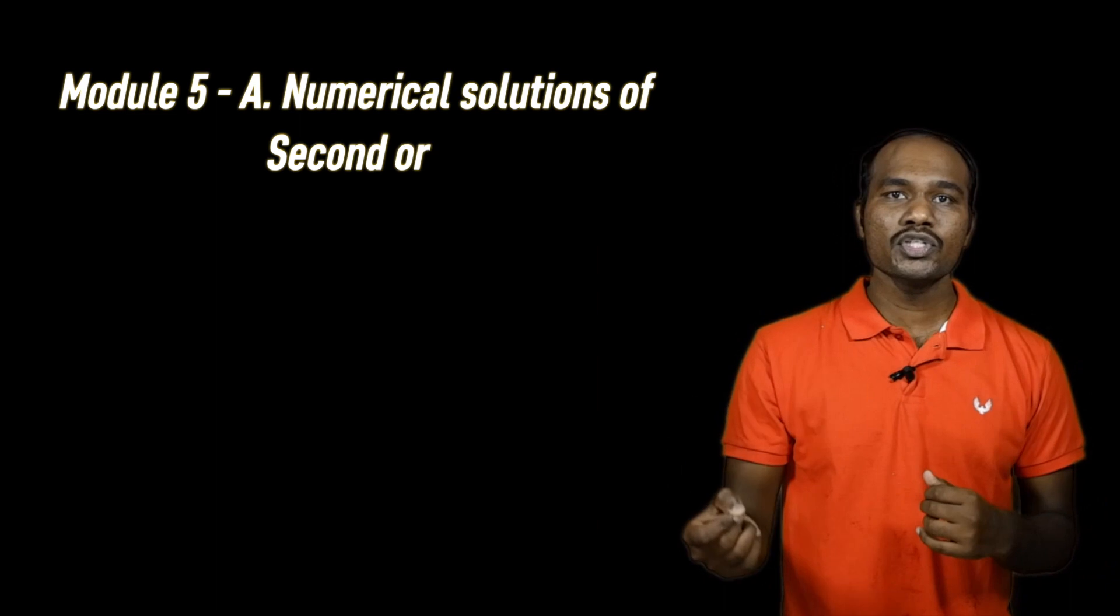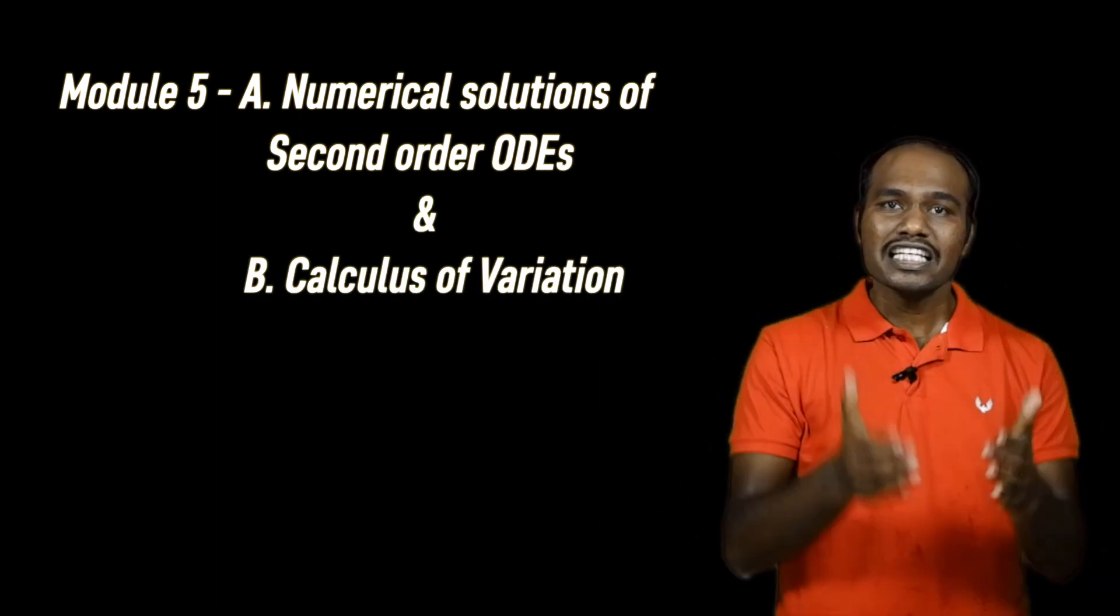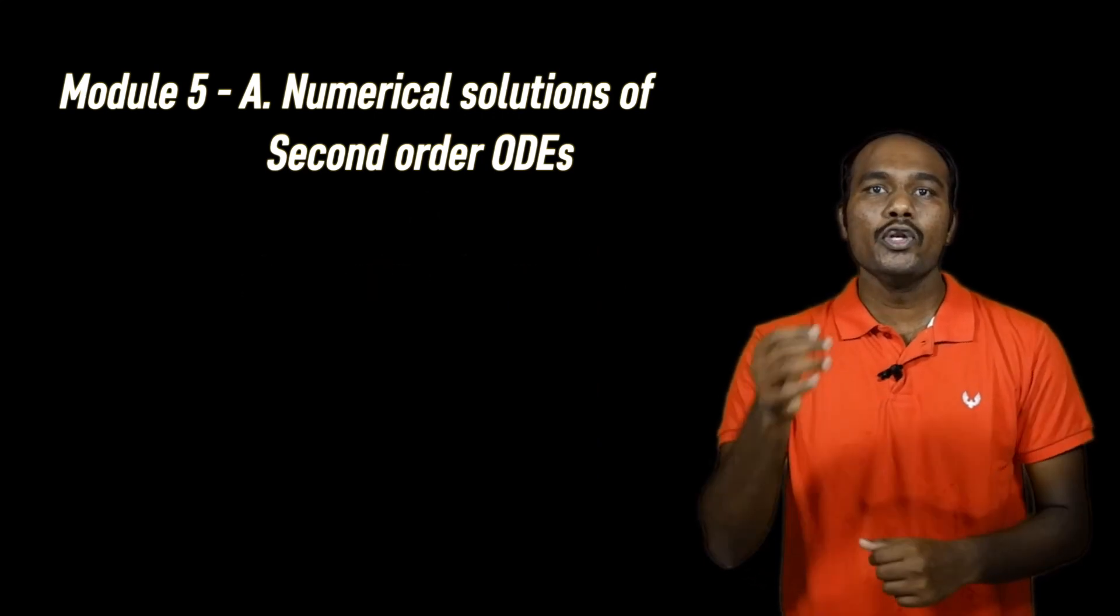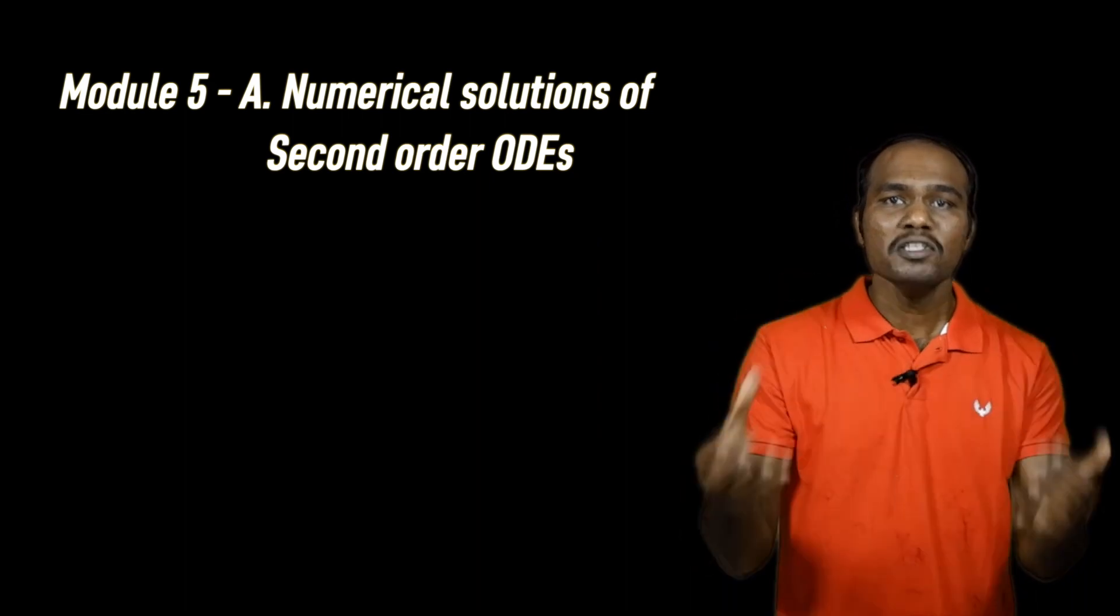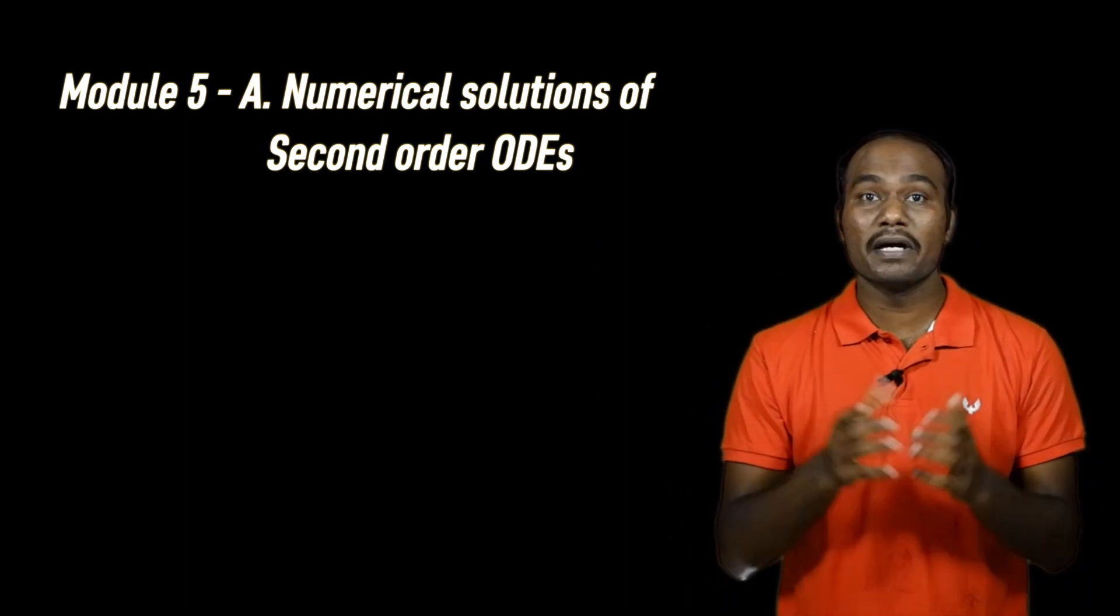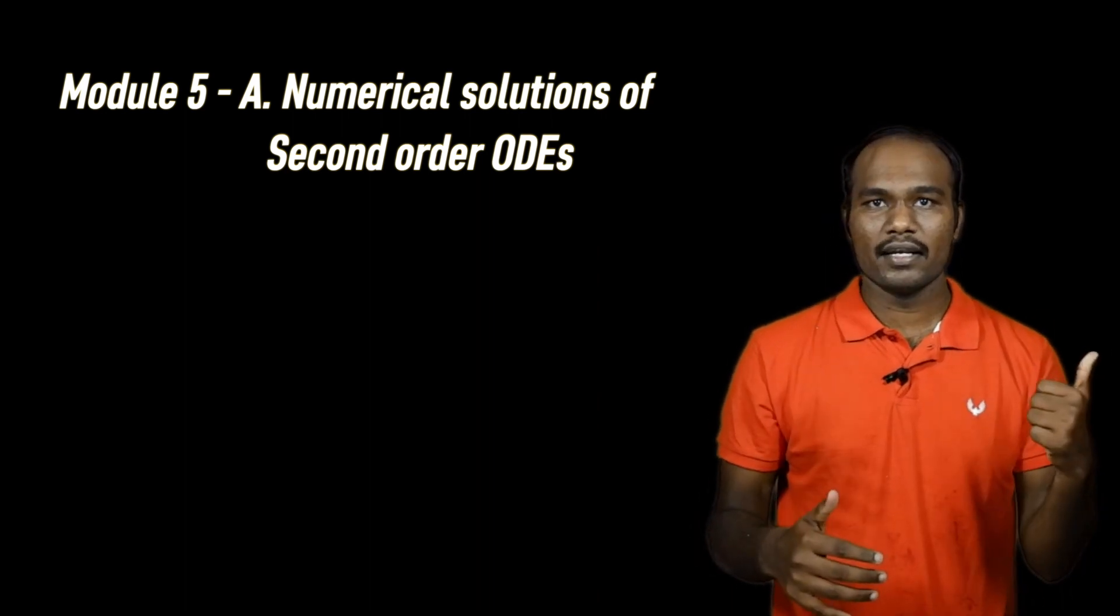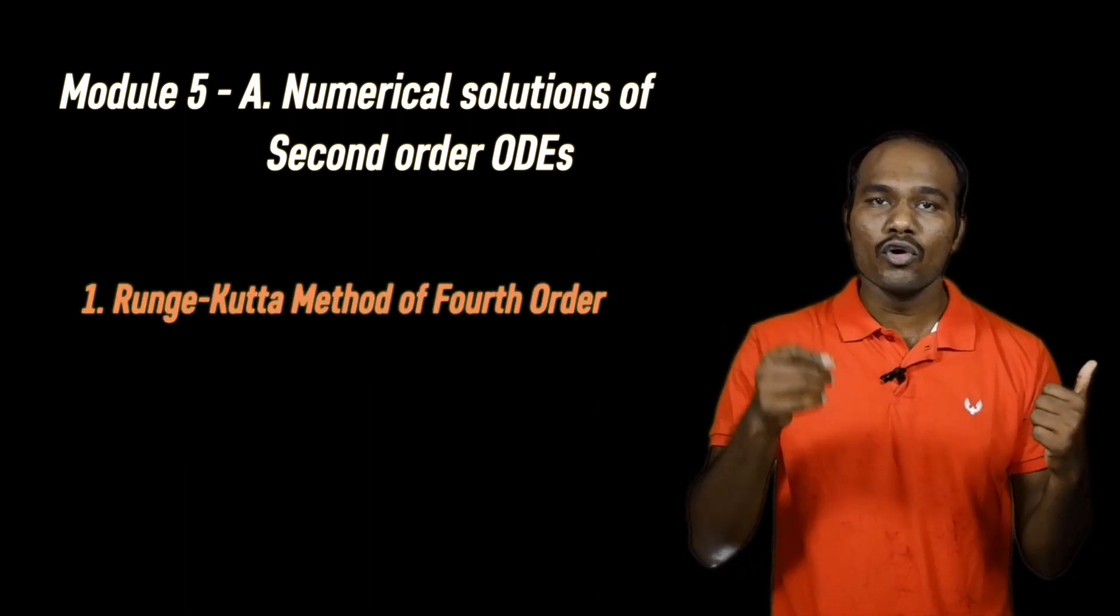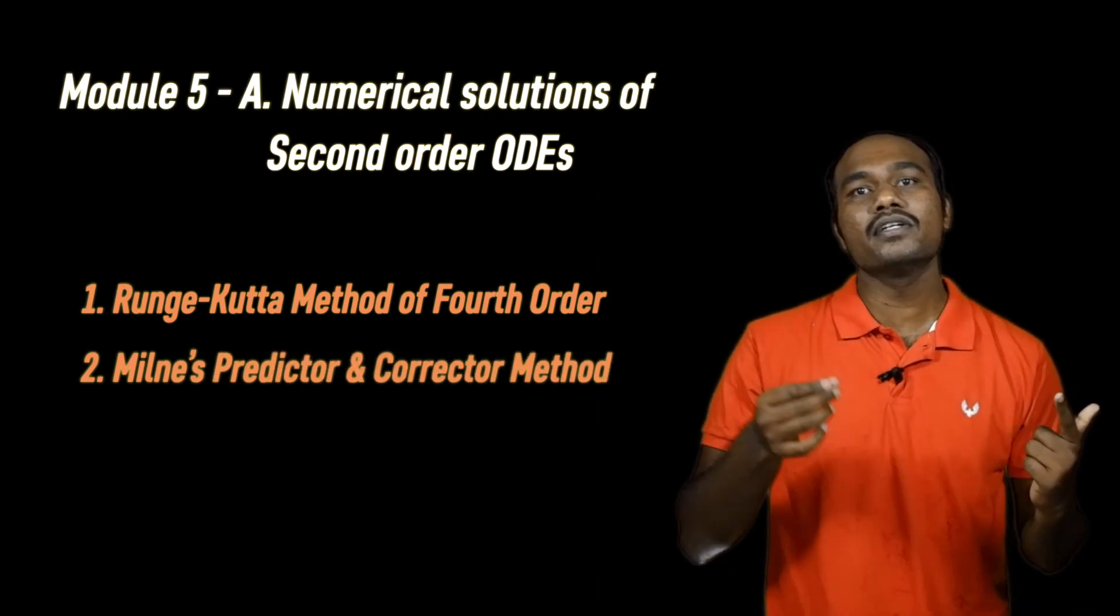The next module you need to learn is module number 5, that is numerical solution of second order ODE and calculus of variation. The first part in this module is numerical solution of second order ODE. This has same strategy as the previous module, but there are only 2 numerical methods that you need to learn: Number 1, RK method of fourth order and second, Milne's corrector and predictor method.